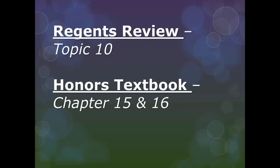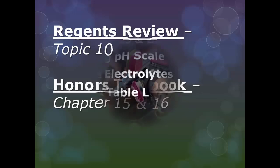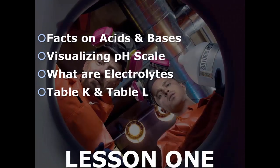The different topics and chapters are Topic 10 from the Orange Regents Review Book, and the Honors Class you guys should be reading Chapters 15 and 16. We're going to be talking about the facts on acids and bases. We're going to also visualize the pH scale. We're going to talk about what electrolytes are, and then we're going to describe Table K and Table L, so please make sure your reference tables are handy.